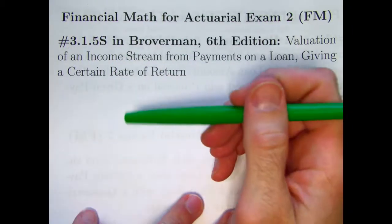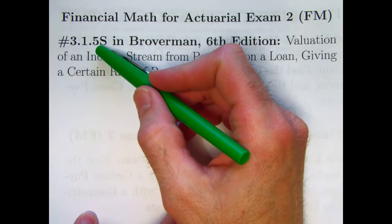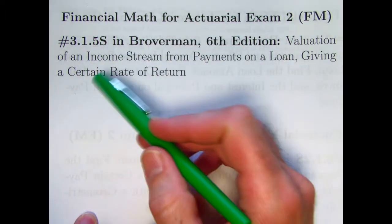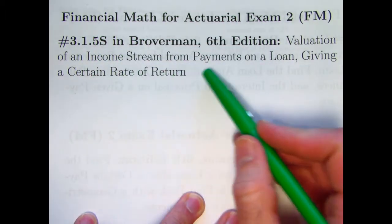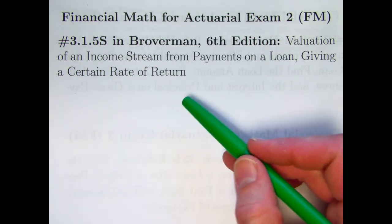In this video, we'll be solving an old actuarial exam problem, problem 3.1.5S, valuation of an income stream from payments on a loan giving a certain rate of return.